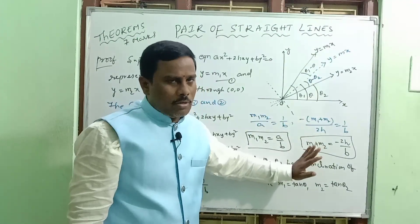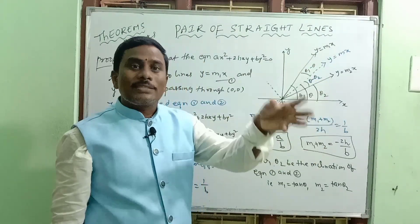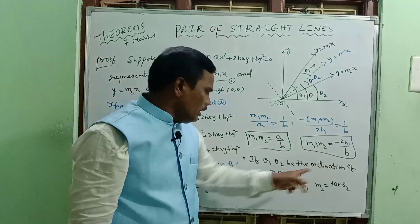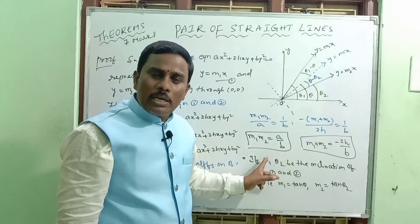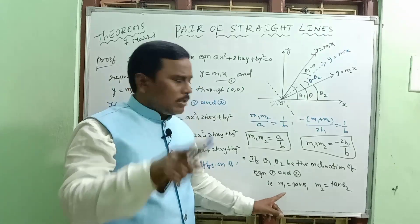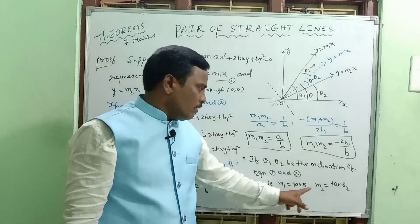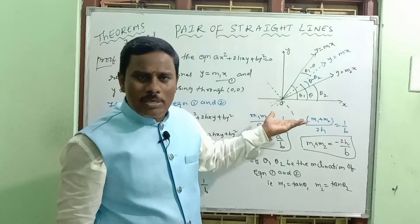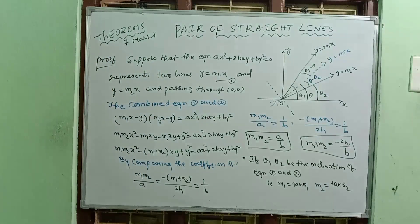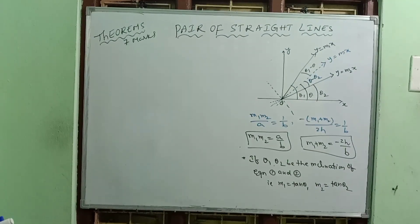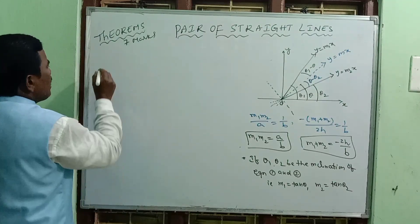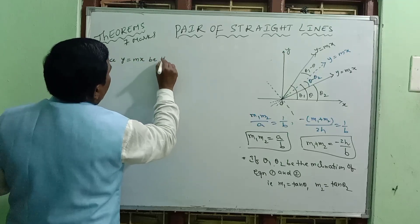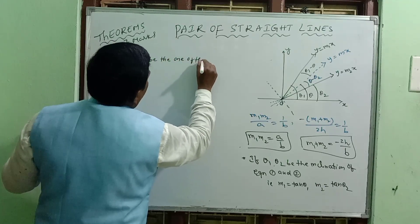Now, theta1 and theta2 are the inclinations of equations 1 and 2 with the x-axis. Since tan theta equals the slope, M1 equals tan theta1 and M2 equals tan theta2. Let y equal to mx be one of the angular bisectors of equations 1 and 2, whose inclination is theta, so M equals tan theta.